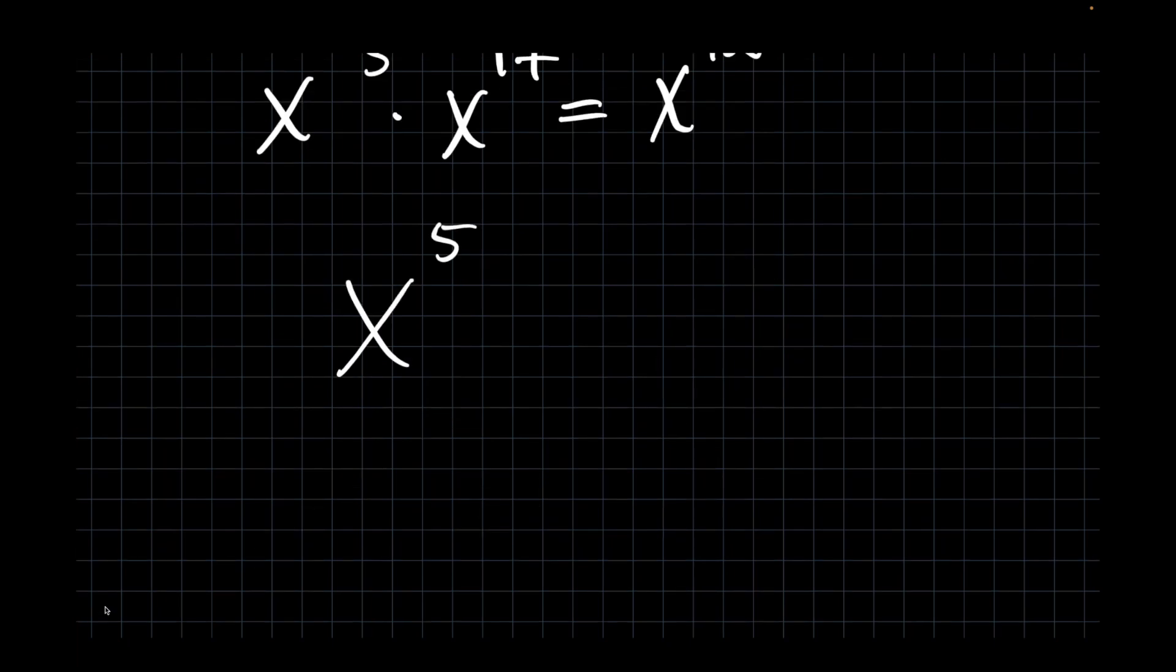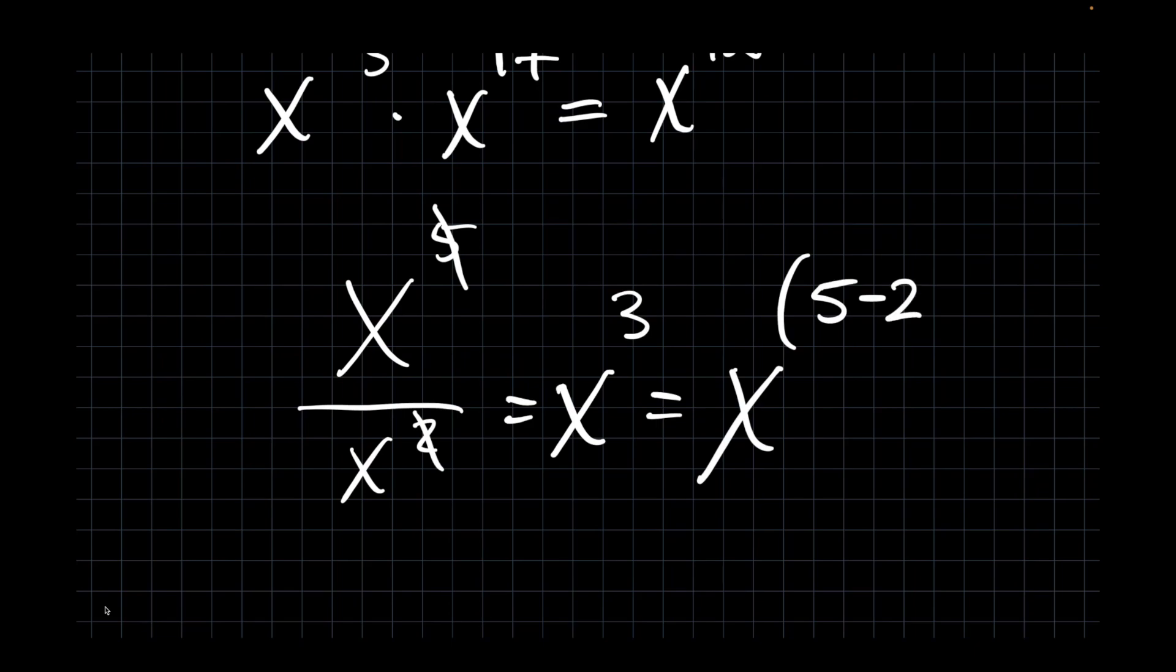x to the 5th over x to the 2nd, 5 minus 2, x to the 3rd.